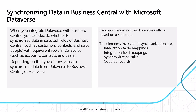In Dataverse they are named account, contact, and user, while in Business Central they are called customer, contact, and salesperson. Depending on the type of row, you can synchronize data from Dataverse to Business Central or vice versa — so you can have dual synchronization. Synchronization can be done manually or based on a schedule.